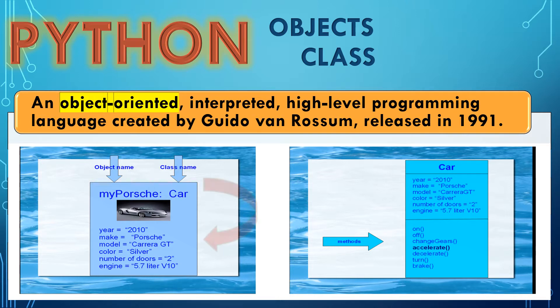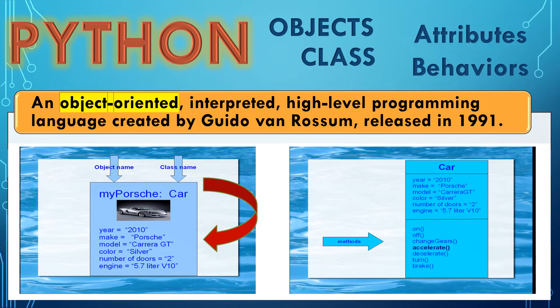We can think of a class as a sketch of a car with labels — it contains all the details about the make, model, color, number of doors, and engine. An object has two characteristics: attributes and behaviors. Attributes are the fields or properties. In our example, the class name is car; the object is 'my car,' whose attributes include gear, make, model, color, number of doors, and engine.